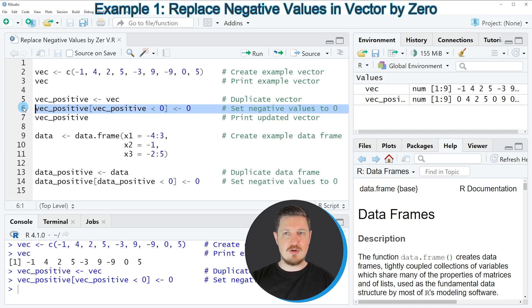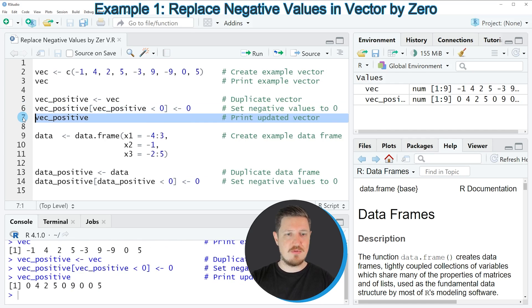If you run line 6 of the code our vector is updated as you can see by printing this vector to the RStudio console by running line 7 of the code. After running this line of code you can see that we have replaced all negative values in this vector object by the value zero. In this first example I have explained how to replace the negative values in a vector object by zero.